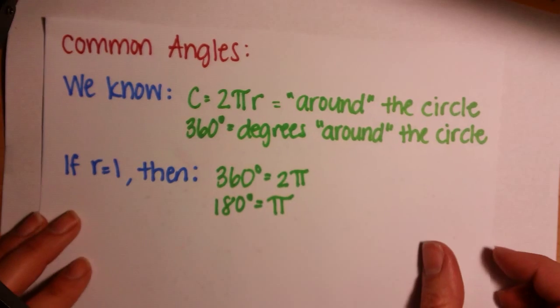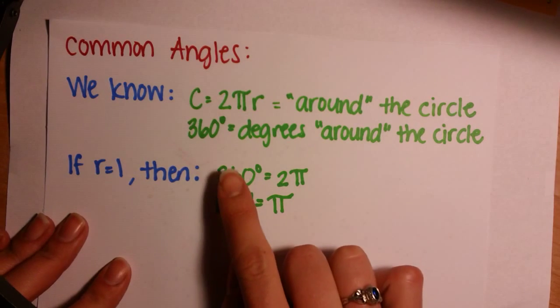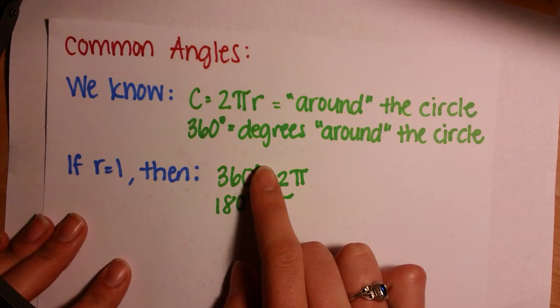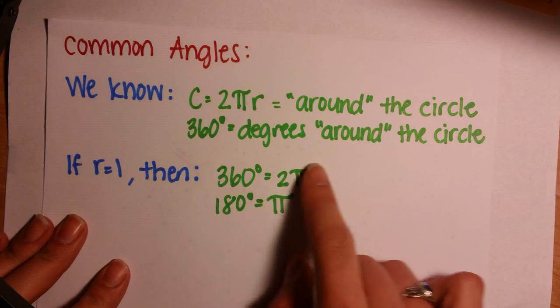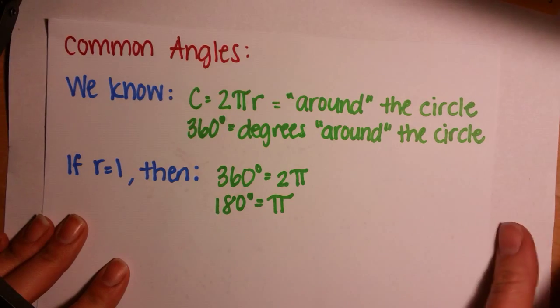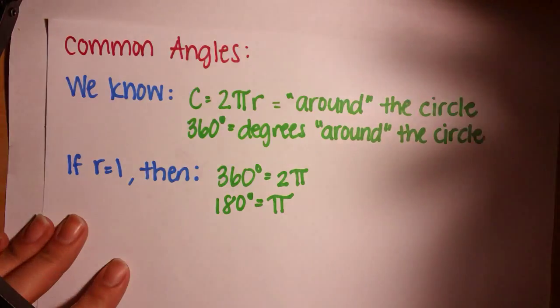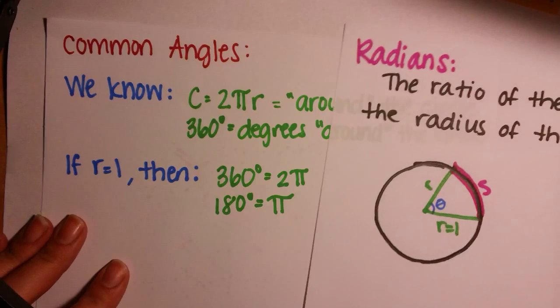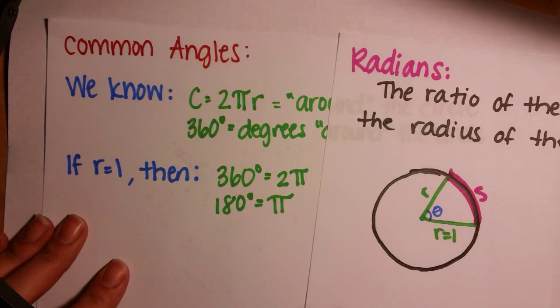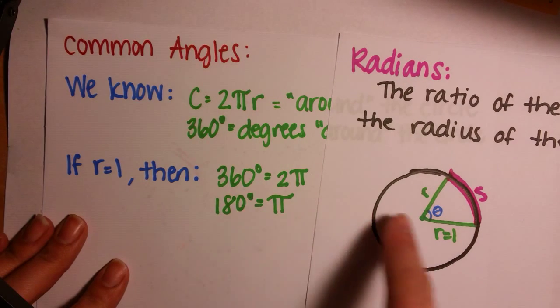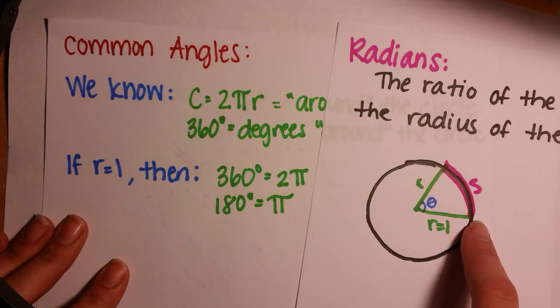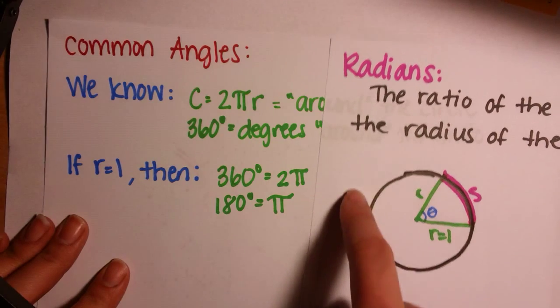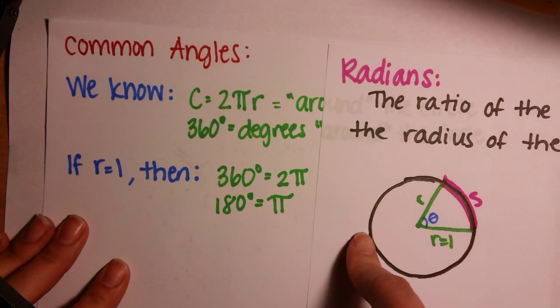So now, we know some common radian angles. We know that the circumference of a circle is 2πr, going all the way around the circle. We know 360 degrees is also all the way around the circle. So if r equals 1, then 360 degrees, going all the way around the circle, is 2π. We also know that 180 degrees, going halfway around the circle, will be just π.